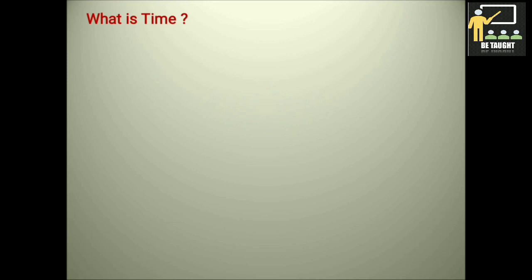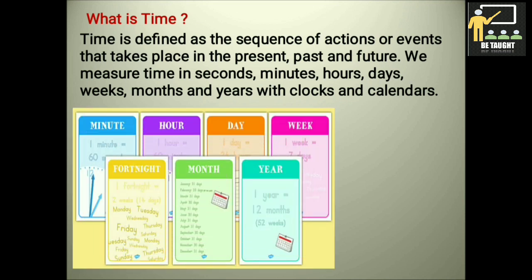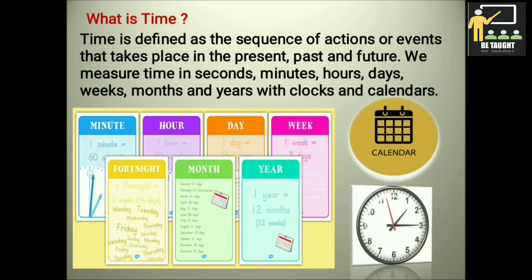What is time? Time is defined as the sequence of actions or events that takes place in the present, past and future. We measure time in seconds, minutes, hours, days, weeks, months and years with clocks and calendars.